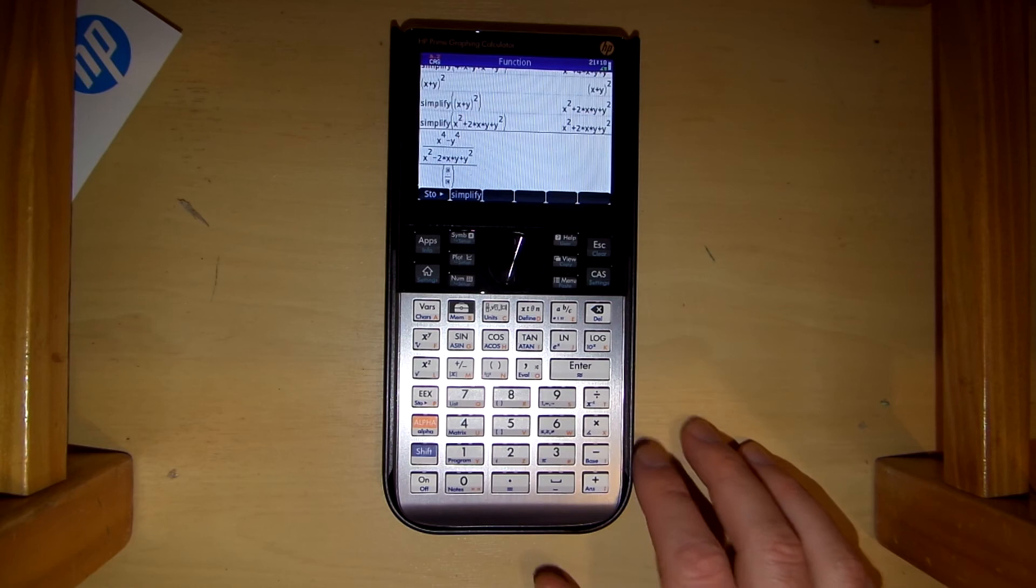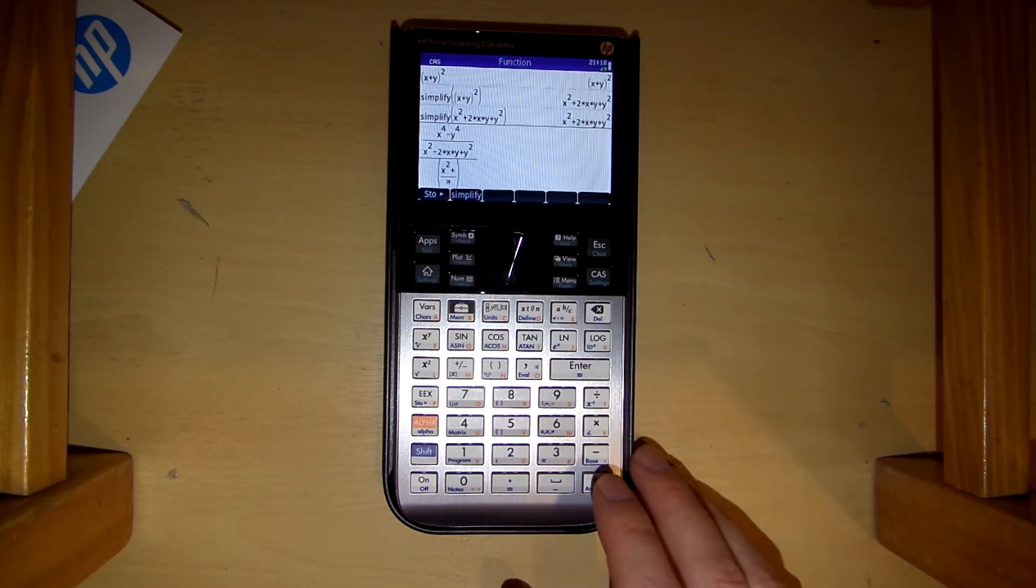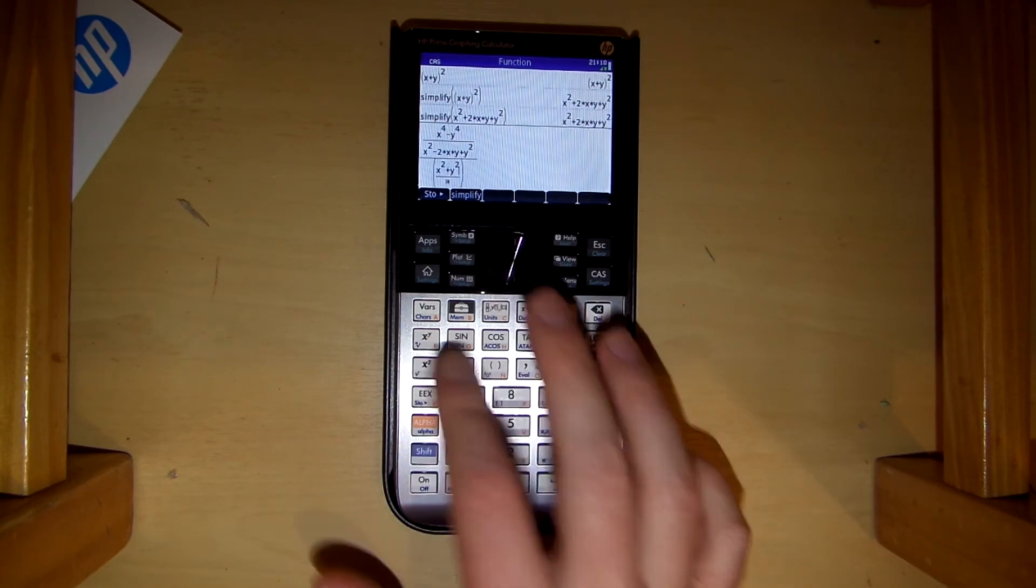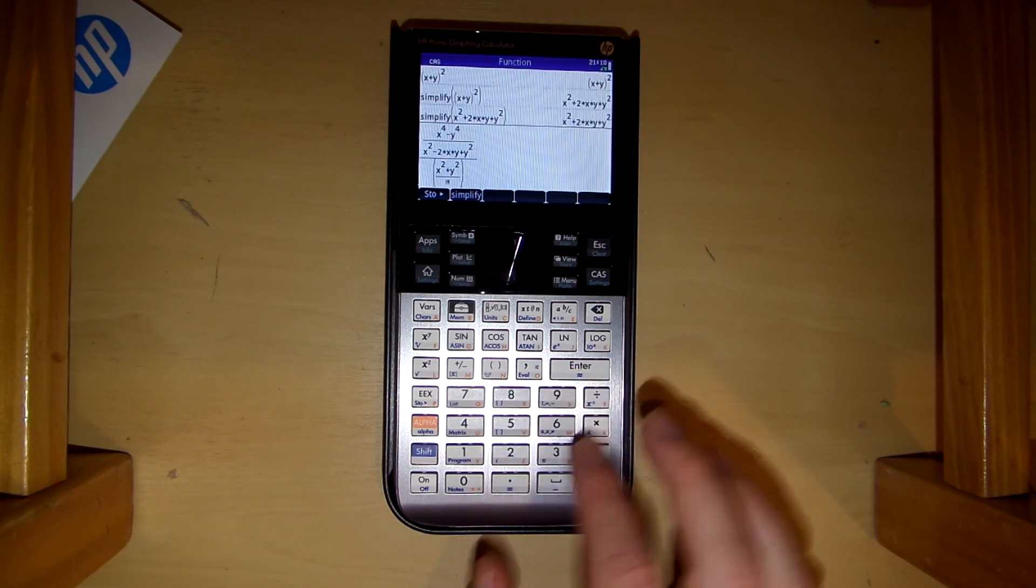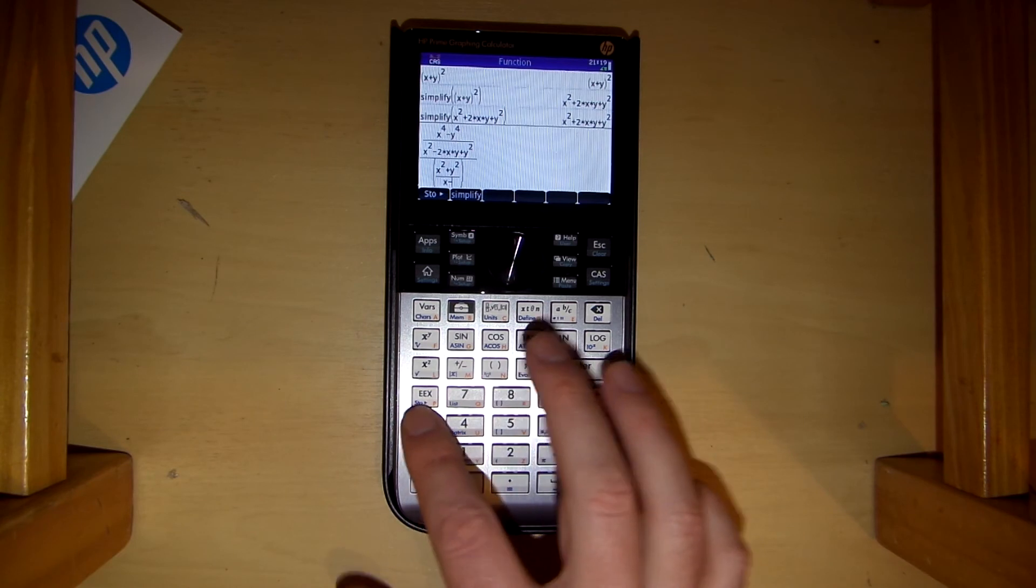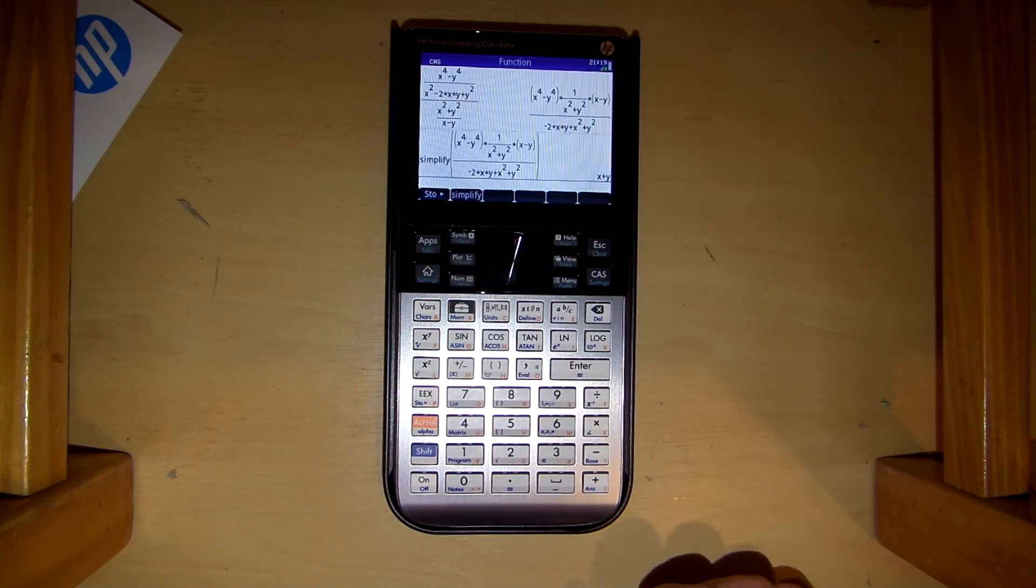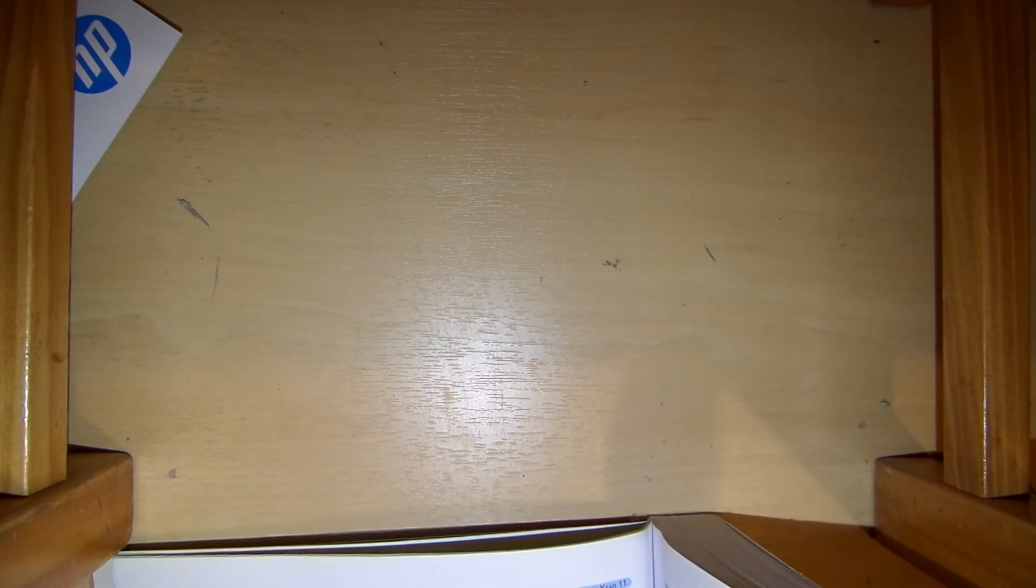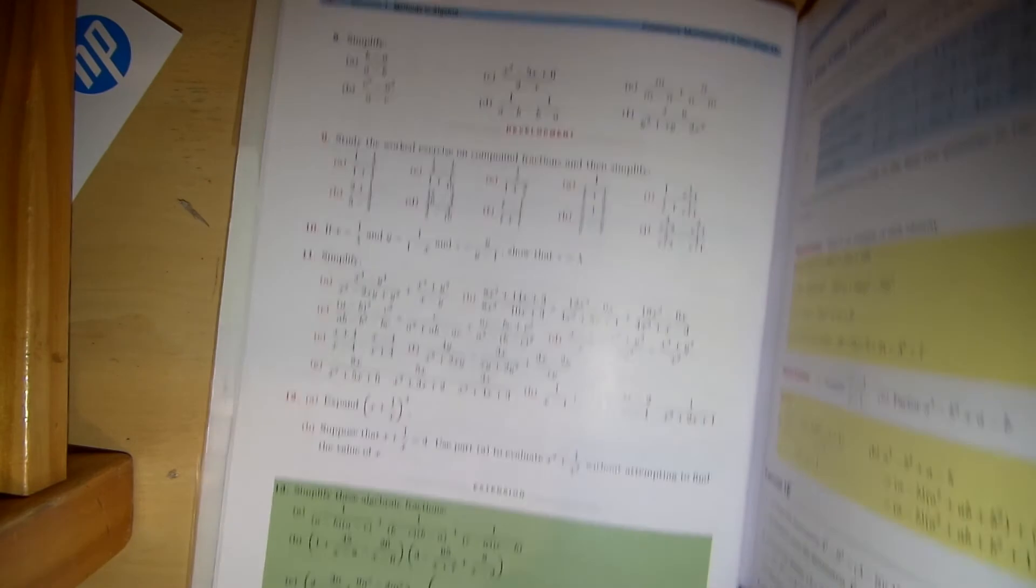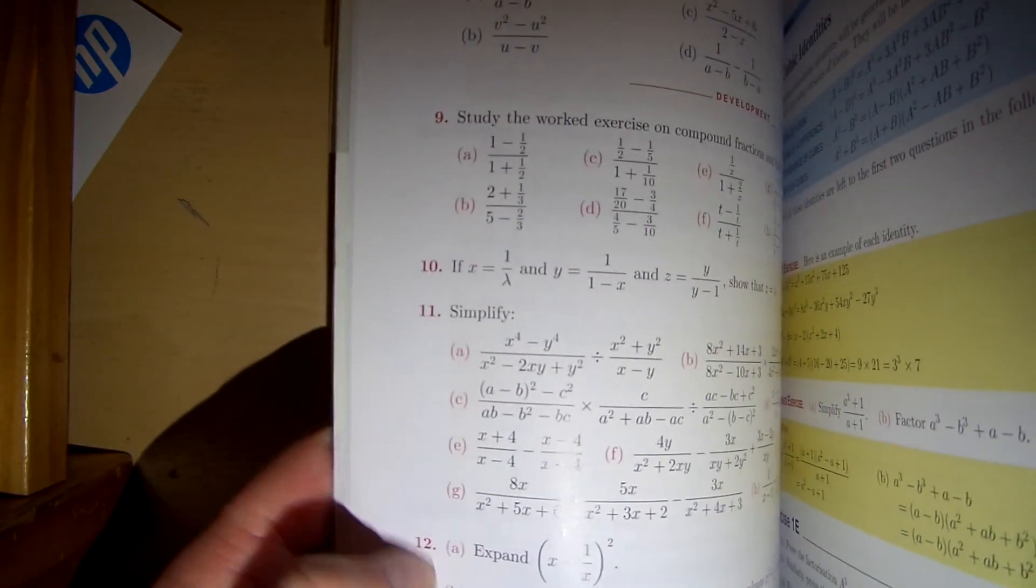And then x squared plus, oh plus y squared. And divide that by x minus y. Okay. Now the problem that I'm looking at here. I'll just move the calculator to the side. In fact looks like I'll just move this under here like so. It's this problem. Here you might be able to zoom in. Maybe I can help you there. So this one here.